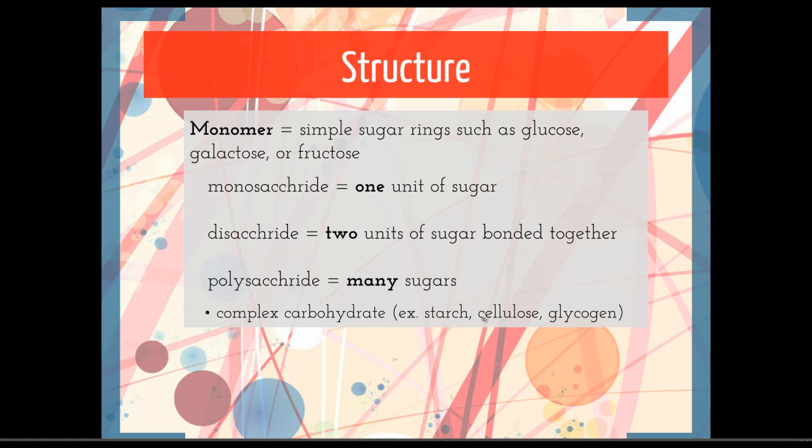Cellulose is going to be a complex carbohydrate that's important in plants. Glycogen, I mentioned earlier, is a different form of energy that we store in our liver and muscle cells.